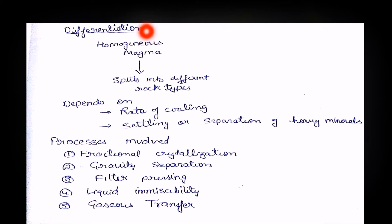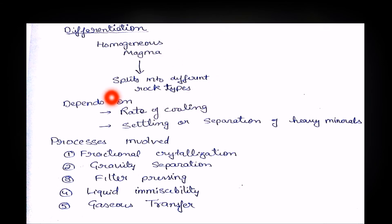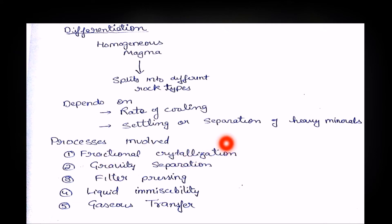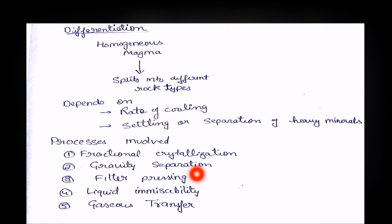Next is differentiation. A homogeneous magma splits into different types of rocks depending on rate of cooling and settling or separation of heavy minerals — that is called differentiation. The processes involved are fractional crystallization, where a mineral that crystallizes is fractionated out in parts, and gravity separation, where heavy minerals settle down due to their high specific gravity.